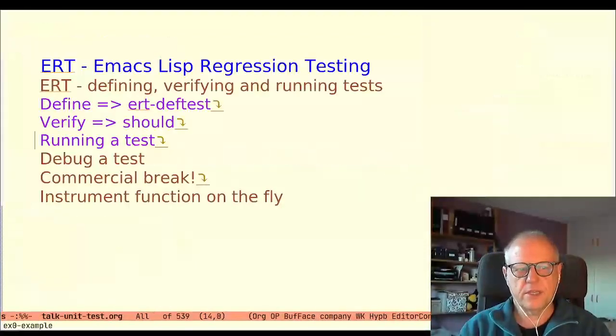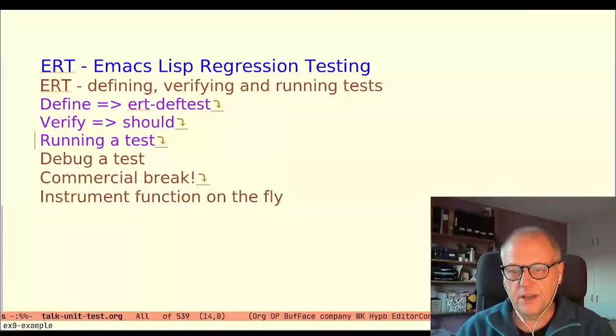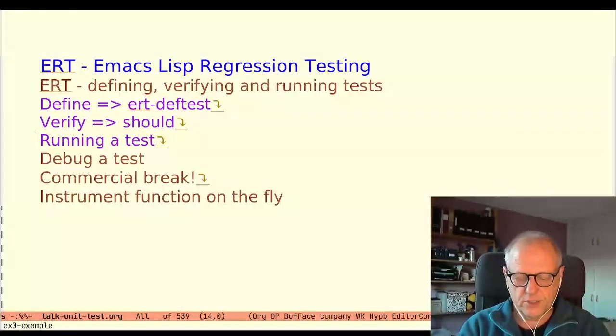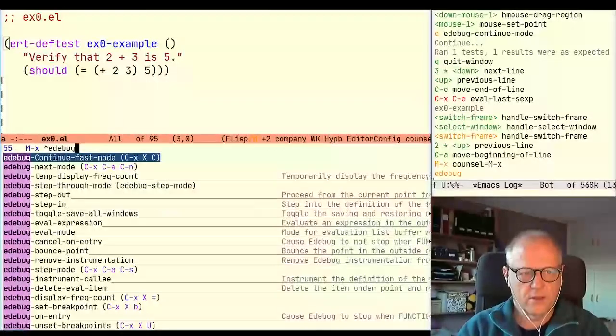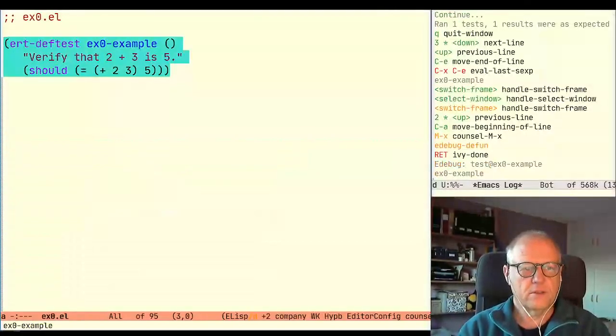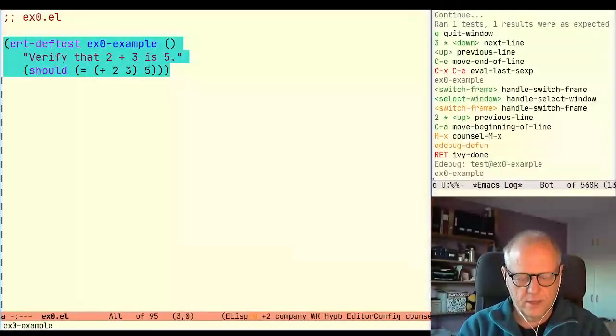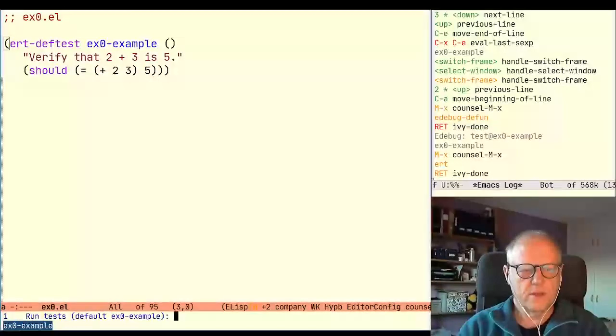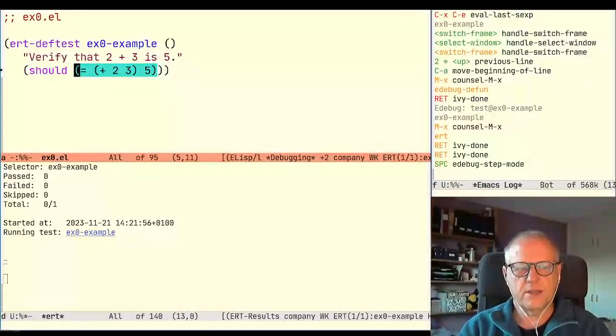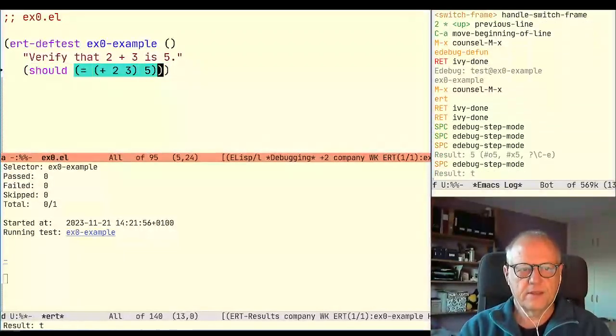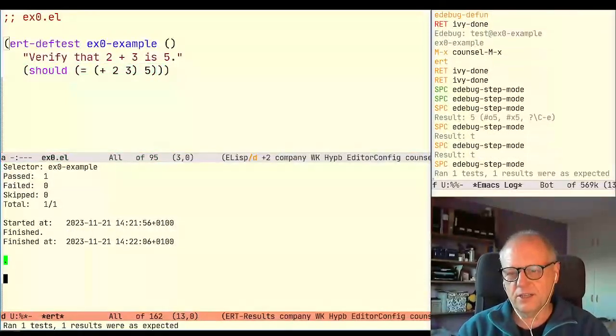So now we've seen how we can run a test case. Can we debug it? Yes. For debugging a test case the ERT test can be set up using the edebug-defun just as a function or macro is set up or instrumented for debugging. Let's try that. So we try edebug-defun here. So now it's instrumented for debugging and we run it and we're inside the debugger and we can inspect here what's happening, step through it and yes it succeeded just as before.